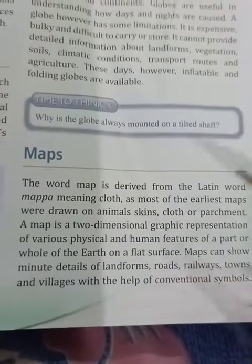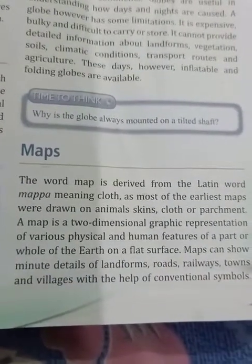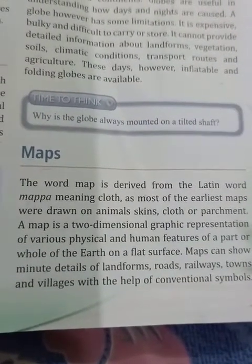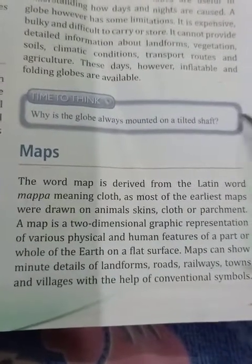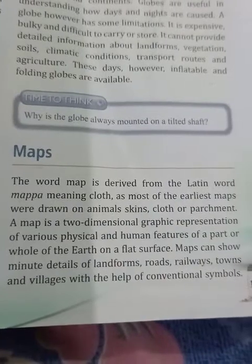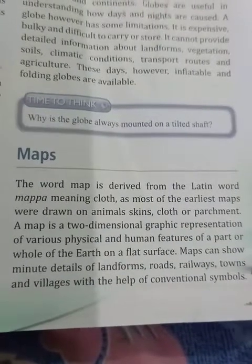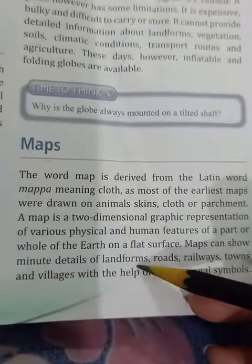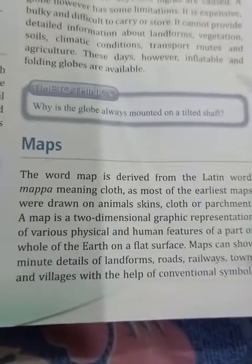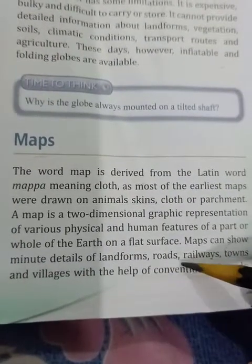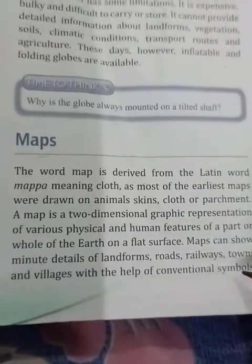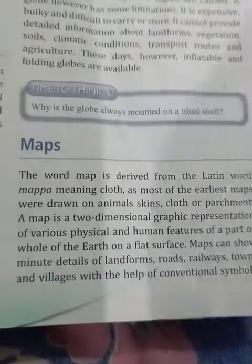A map is a two-dimensional graphic representation of various physical and human features of a part or whole of the earth on a flat surface. Maps can show minute details of landforms — we can show roads, railways, towns, and villages with the help of conventional symbols.